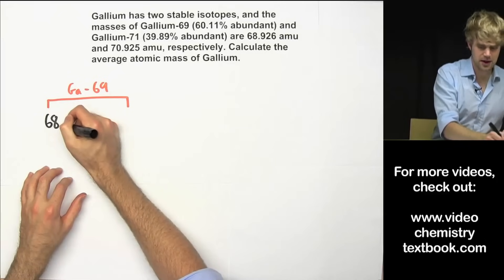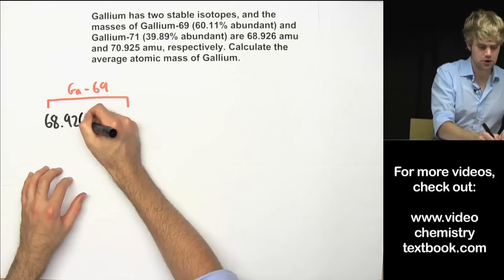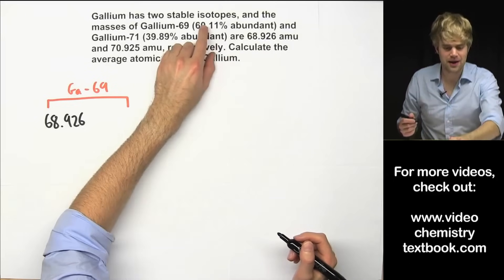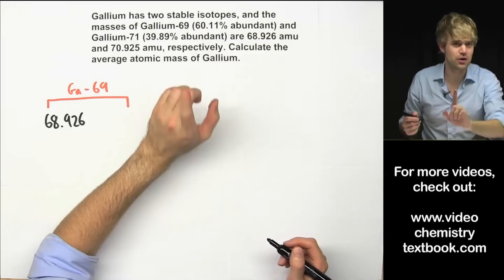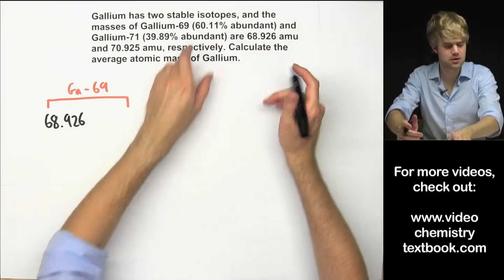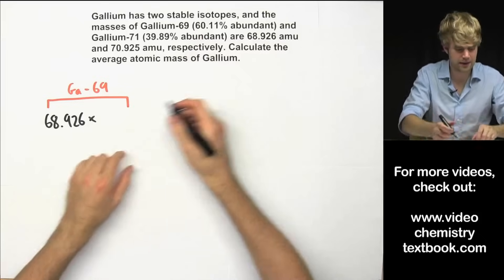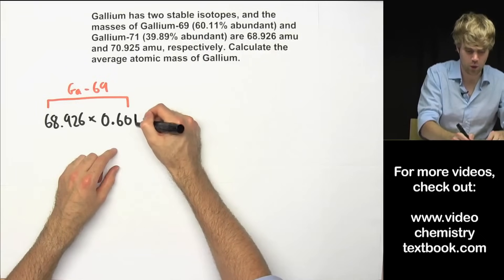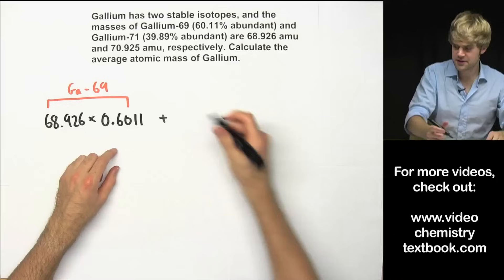It is 68.926 and now we want to multiply this by gallium-69's percent abundance but expressed as a decimal. So we'll be moving the decimal place two spots to the left times 0.6011. That's the first part.